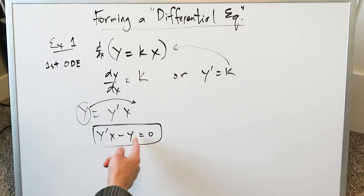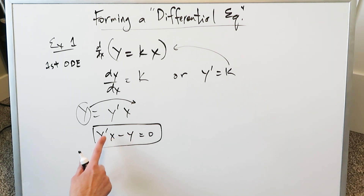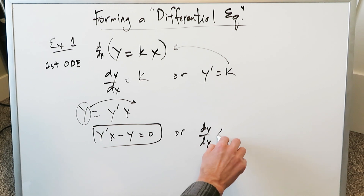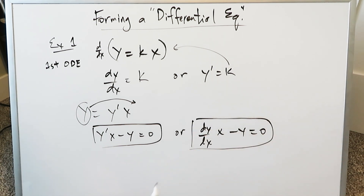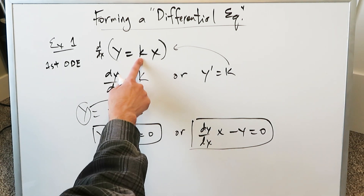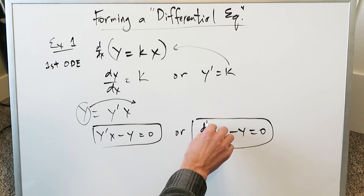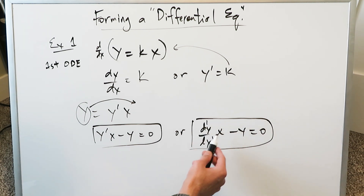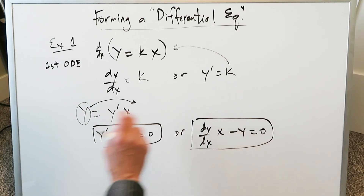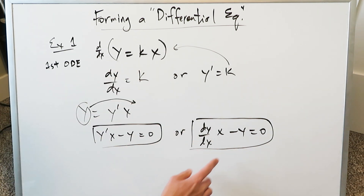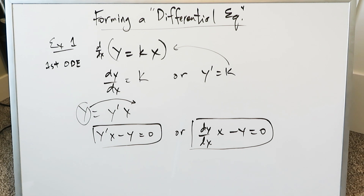This is a first order differential equation developed from the expression y = kx, which had a single constant. Therefore we developed a first order differential equation, which you can rewrite as x·dy/dx minus y equals zero. Because you know y prime is synonymous with dy/dx. These are both equivalent expressions. The order is represented here — d to the power of 1, y, and dx to the power of 1. It's first order, meaning a first order derivative. That right there is your differential equation generated from the expression.